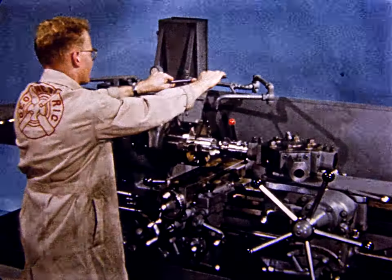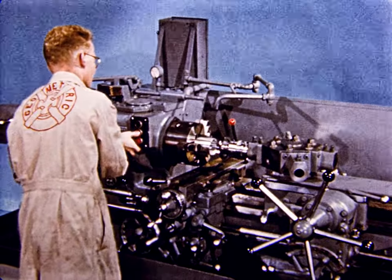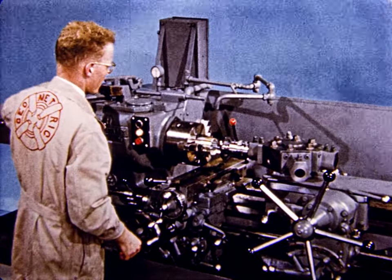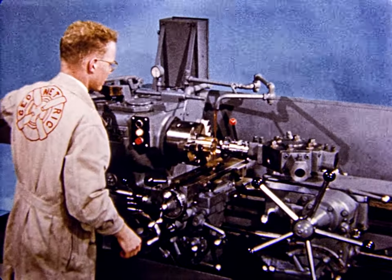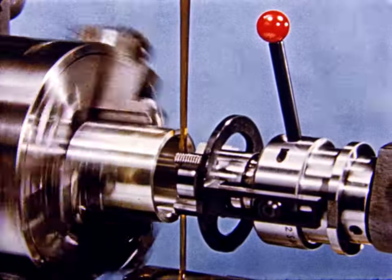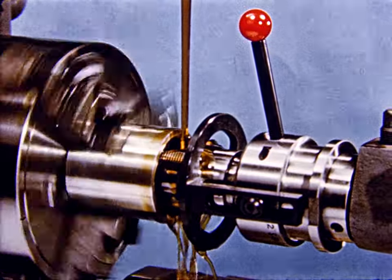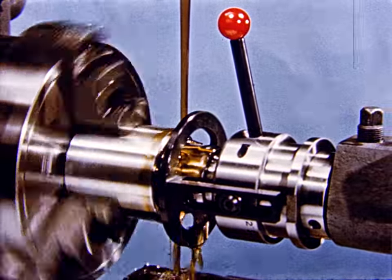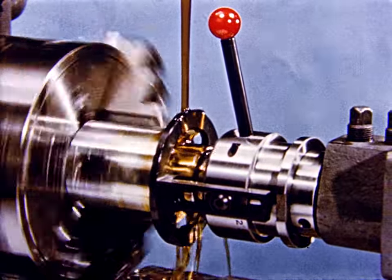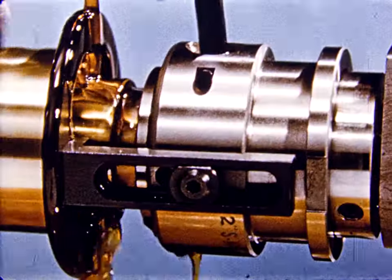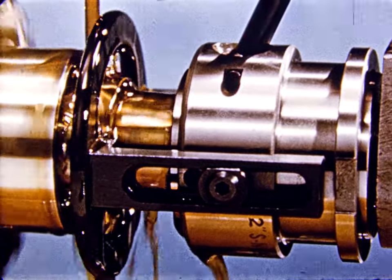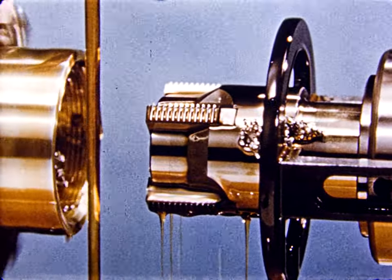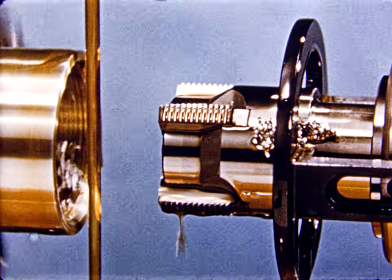Complementing its broad line of die heads, which produce accurate external threads, is geometric line of precision collapsing taps. Like the die head, the collapsing tap is fundamentally a thread cutting tool. It is used to cut internal threads of precise form, pitch, and lead. Because the tap collapses at the end of its threading operation, it can be rapidly withdrawn from the stock without unscrewing it from the work. This feature permits fast operation and avoids damage to the new threads.